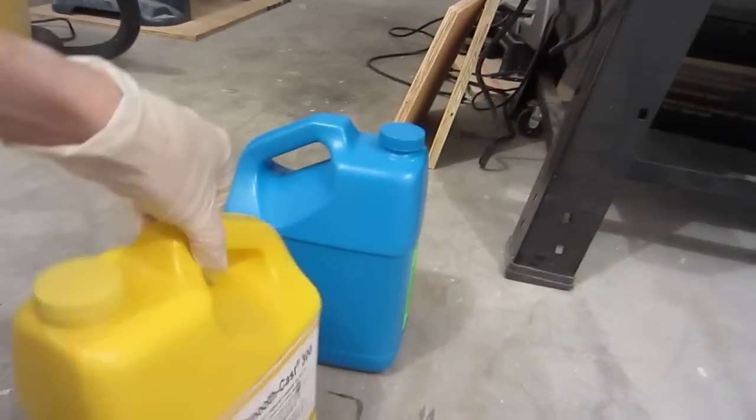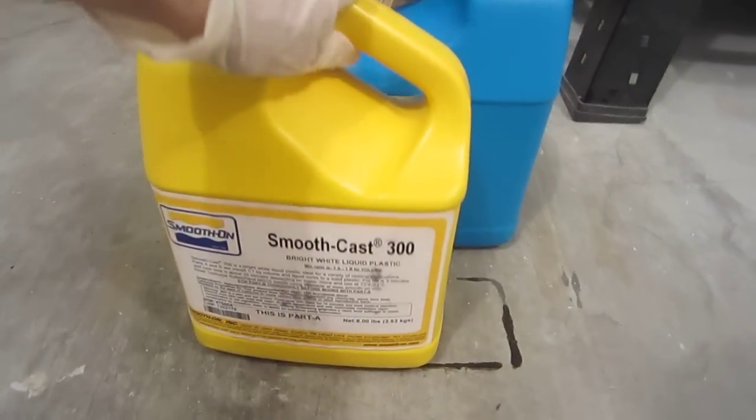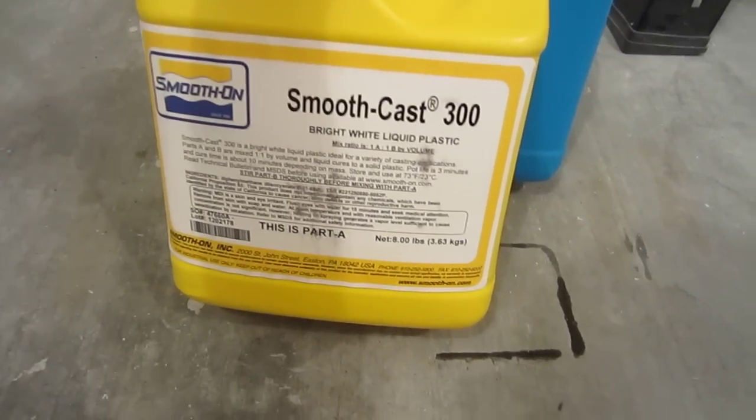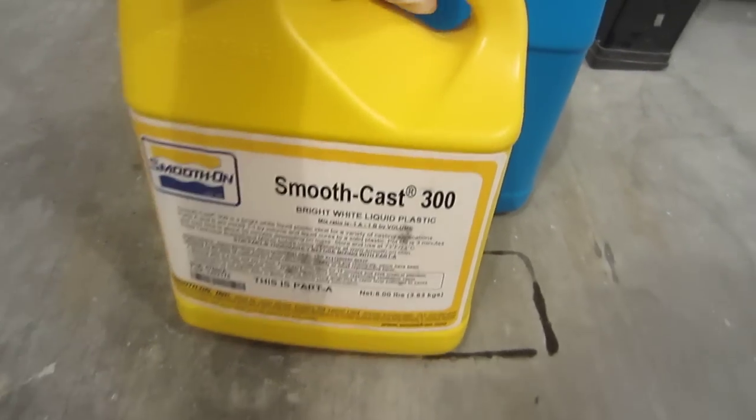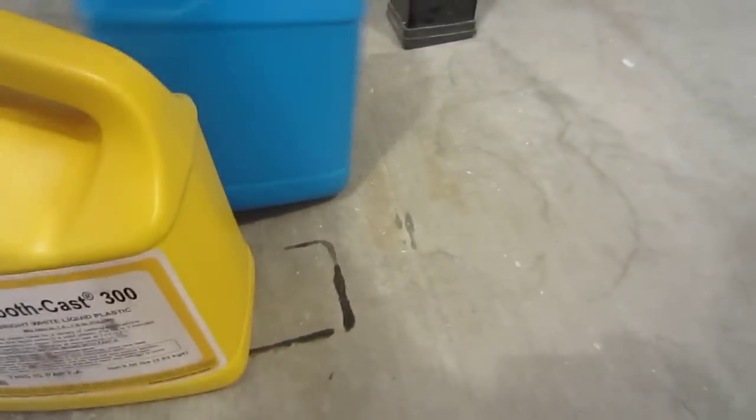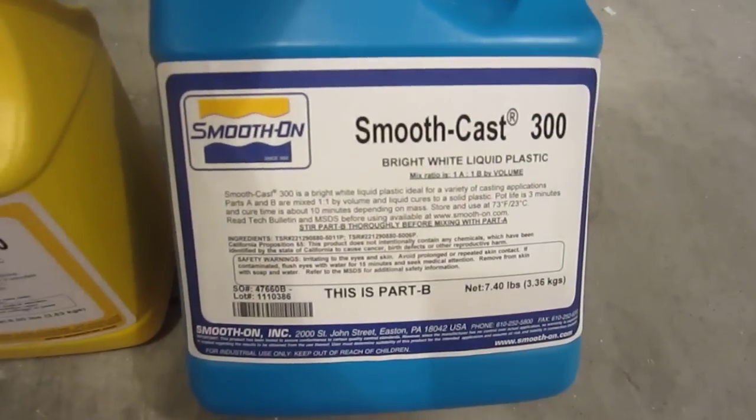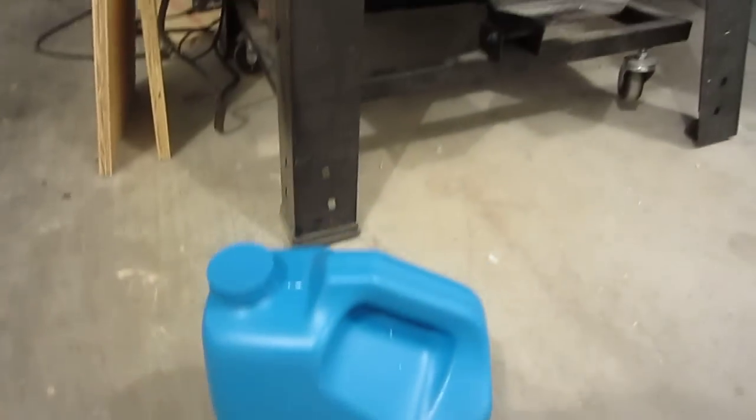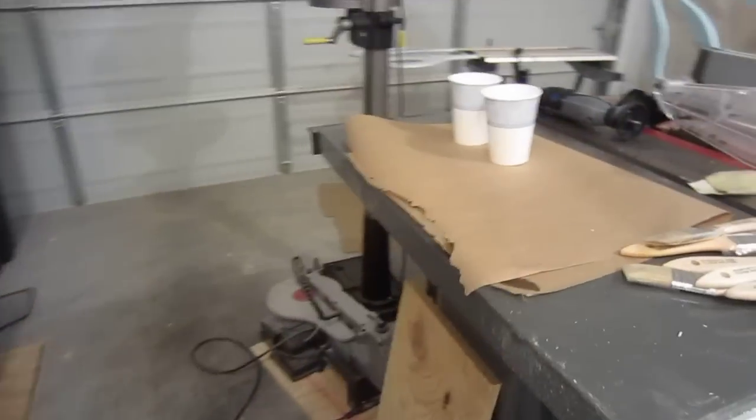And I'm not really wanting to use fiberglass just because that's more of a pain to deal with. So I'm using Smooth-Cast 300, or Smooth-Cast I should say, from Smooth-On. This jug is the part A, this jug is the part B. Mix them to a one-to-one ratio and you get some lovely white liquid plastic.